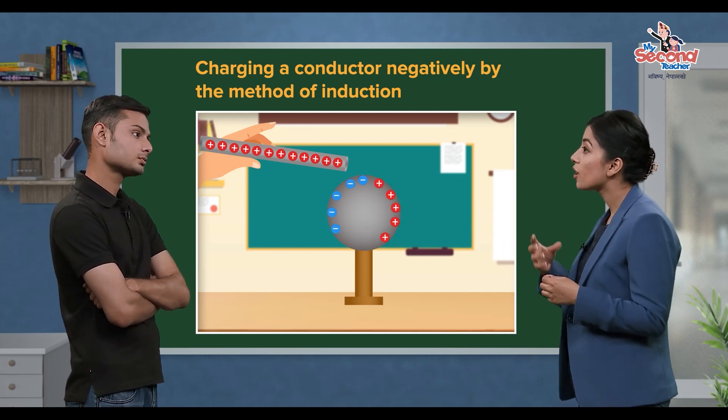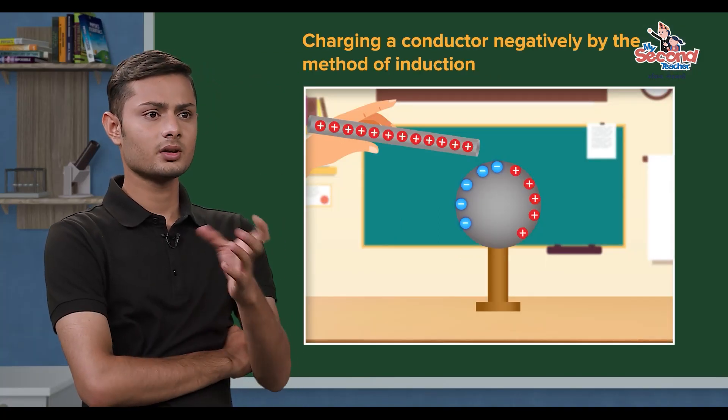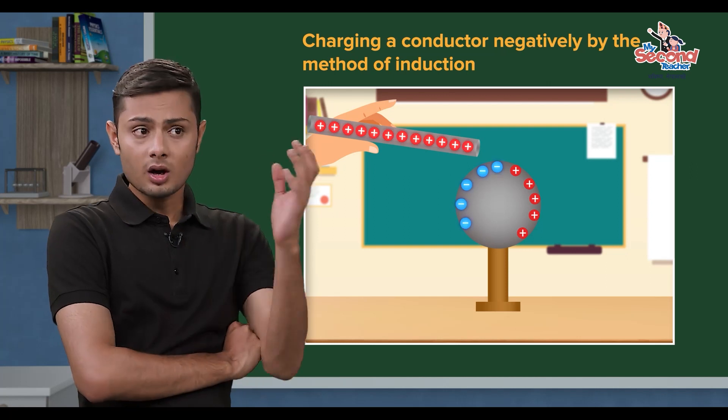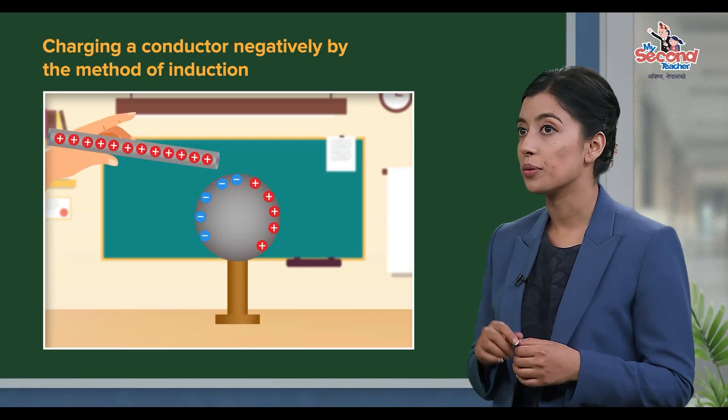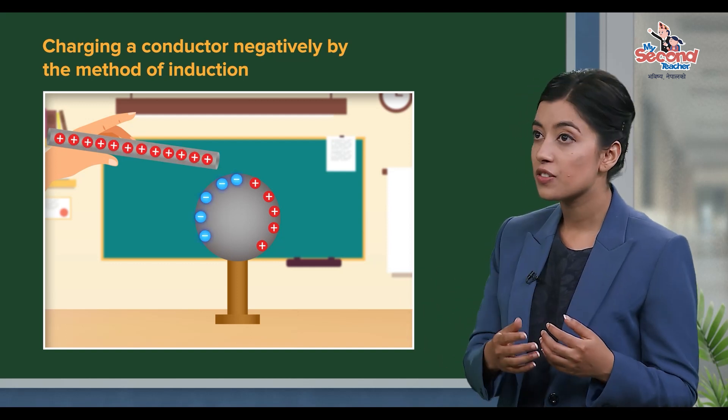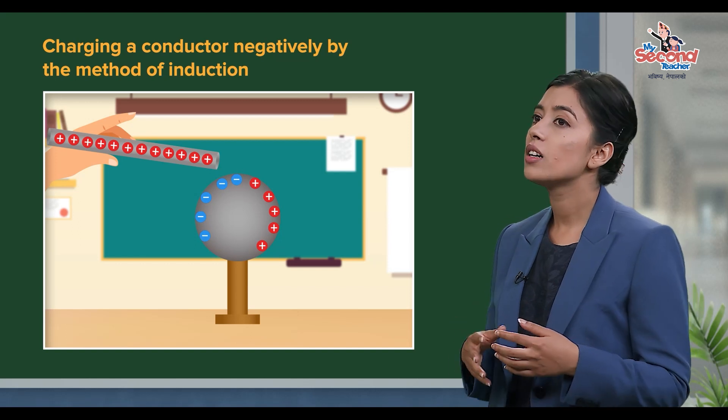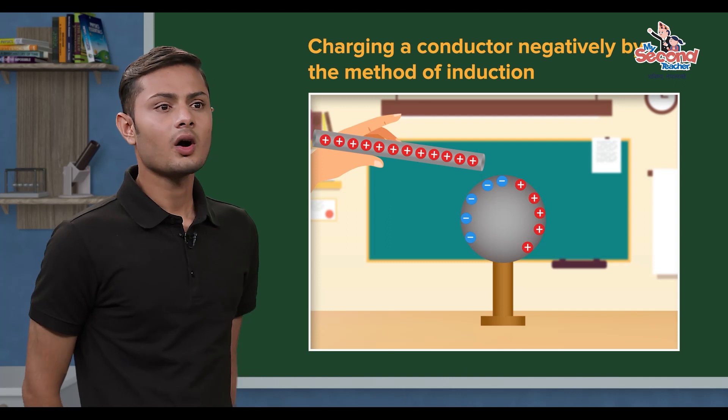Glass rod ko side ma jamba hunshan and they accumulate. Glass rod ko naajik metal sphere ko negative charge jamba hun. Glass rod ma positive charge baha ye kaale rod ko naajik sphere ko negative charges accumulate hunshan and sphere ko orko bhaag ma positive charges accumulate hunshan.